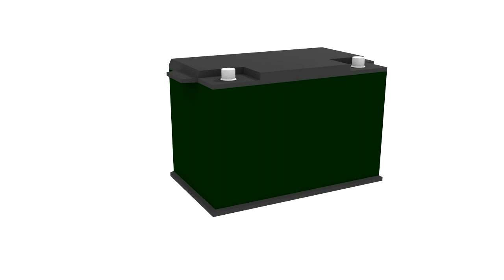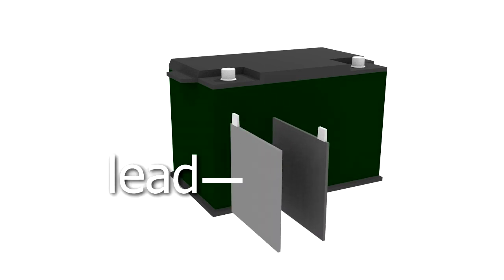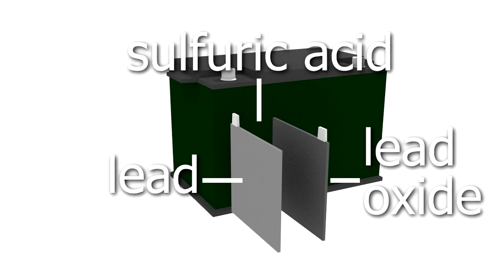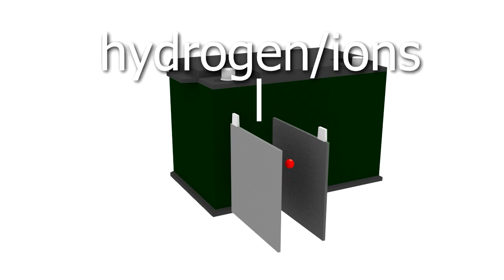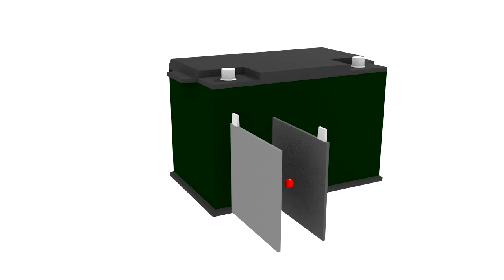An example of something that uses ions is a lead acid car battery. They contain lead plates alternating with lead oxide plates. Between them is sulfuric acid. While they're charged and being used, positively charged hydrogen atoms, the ions, move from the negative plates to the positive plates. In this case it really is the positive charge that's moving inside the battery, acting as the current.